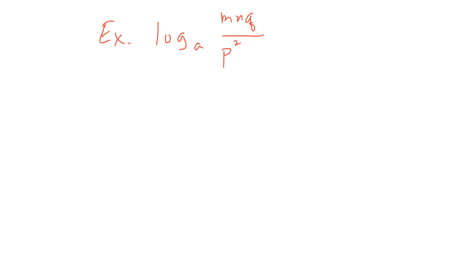Now let's apply those three major log properties in an example. Instead of having only one log function, we're going to express multiple log functions — this is called expansion. First, we look at the numerator, which is m times n times q. Since the letters are sitting beside each other, that's multiplication, so we use the product rule.